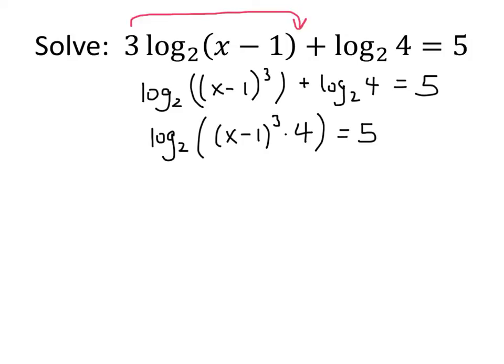And now, just like the previous example, we've gotten this to the point where we just have a simple logarithmic equation. The log base 2 of this complicated expression equals 5. So all we're going to do is rewrite that in exponential form, and when we do that, we get x minus 1 cubed times 4 equals 2 to the 5th. Now, we can rewrite the left-hand side as 4 times x minus 1 cubed. 2 to the 5th, we can figure out, is 32.